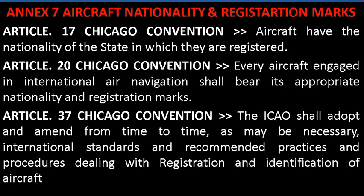Article 17 of the convention states that aircraft have the nationality of the state in which they are registered. As per Article 20, every aircraft engaged in international air navigation shall bear its appropriate nationality and registration marks. As per Article 37, ICAO is the responsible agency for adopting uniform international practices and procedures, and any amendments to these, for dealing with registration and identification of aircraft.